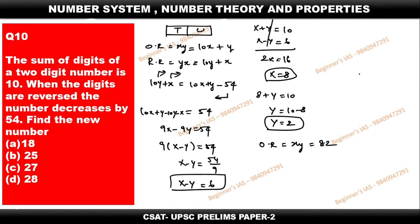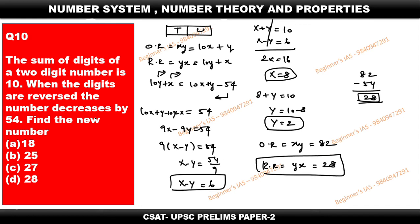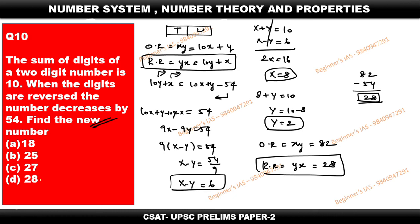The original number is 82. According to the statement, 82 minus 54 equals 28, which means the reversed number is 28. The question is asking for the new number, which is the reversed number YX, and that is equal to 28. So the answer for this question is 28.